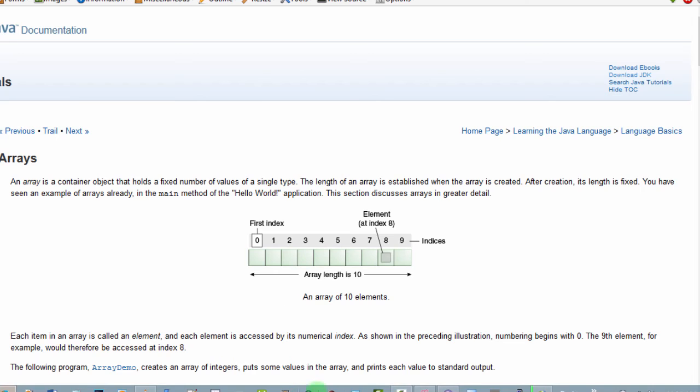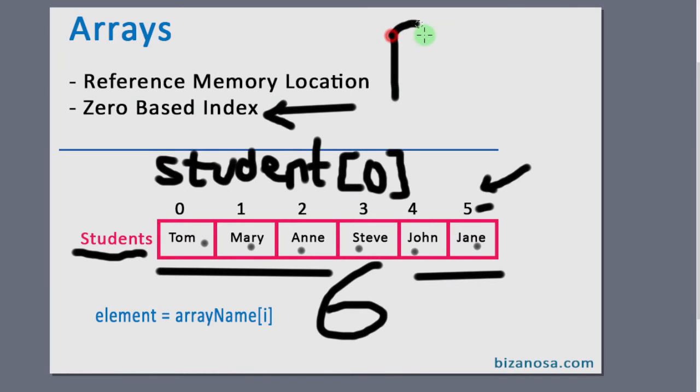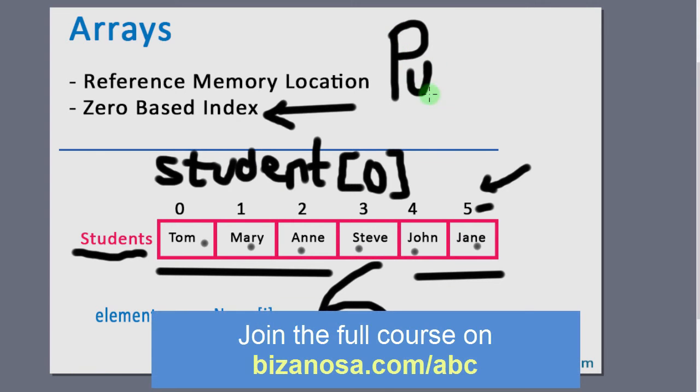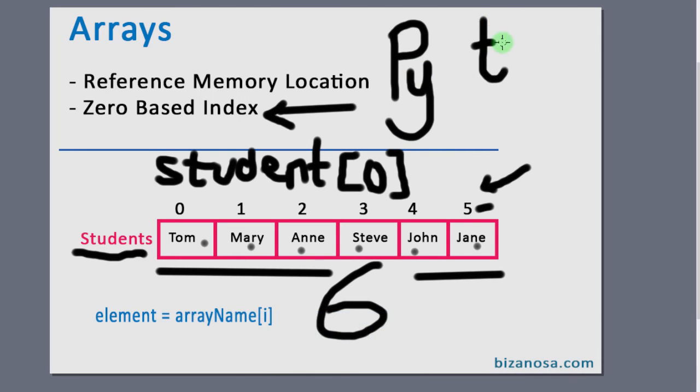So another thing also to note, arrays don't exist in Python. However, Python has lists and it also has tuples. So even though Python doesn't have arrays, learning arrays is important because you're going to face it in lots of different programming languages, especially in the C family languages, arrays are there.